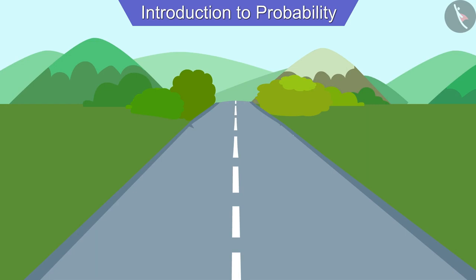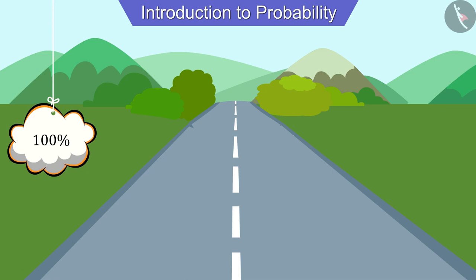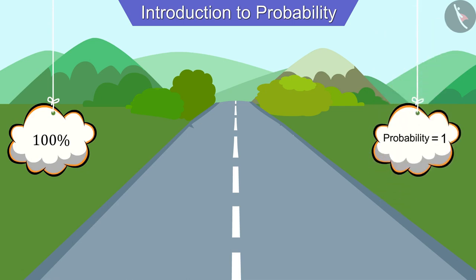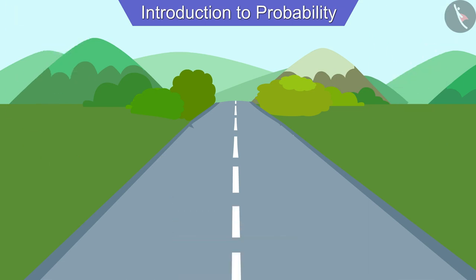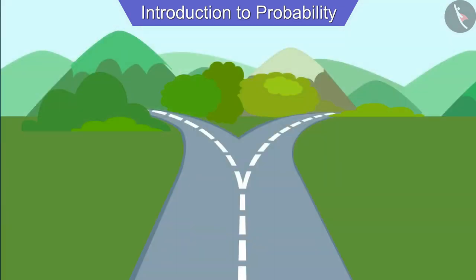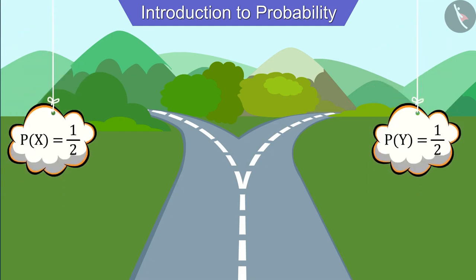But how is this possible? If we have only one road, then we have no other choice, therefore the probability of walking on that path is 100 percent, or we can say the probability is one. So we call this a sure event. As the road divides into more roads, the probability gets divided accordingly, and adding these divided probabilities always gives one.